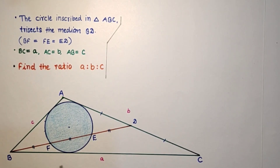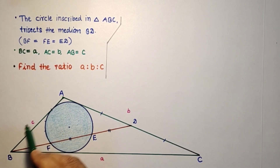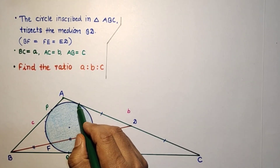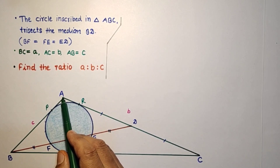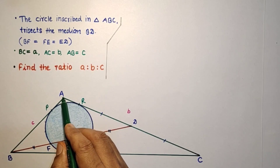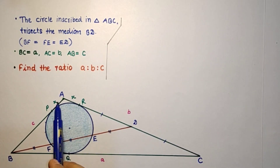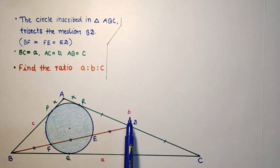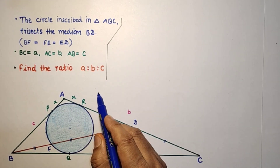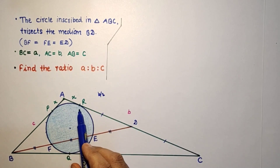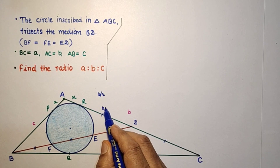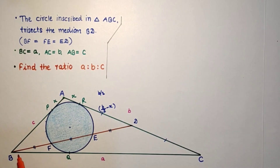Let us suppose the circle touches the 3 sides at points P, Q, and R. Since these are exterior tangent points, the two tangents from each vertex are equal. Let AR equal X, so AQ also equals X. Since BD is a median, it divides AC into 2 equal parts, each of length B/2. So AD equals B/2, and RD equals B/2 minus X.